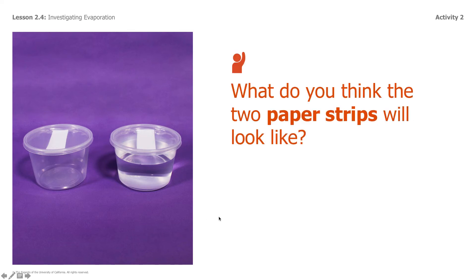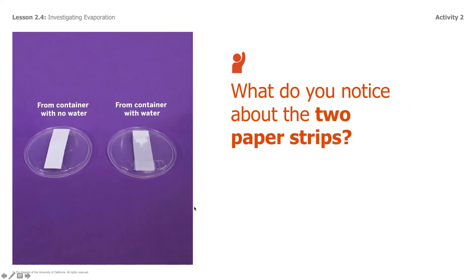I want you to think: what do you think the two paper strips are going to look like? Remember, they're not on top of the containers — they're underneath, inside the containers, just taped to the underside of the lid. Based on your prediction, what are you noticing about the two paper strips? This one came from the container with no water — this is the underside of that lid. And this is the underside of the lid of the container with water. What are you noticing about the two paper strips? Container with no water — container with water.